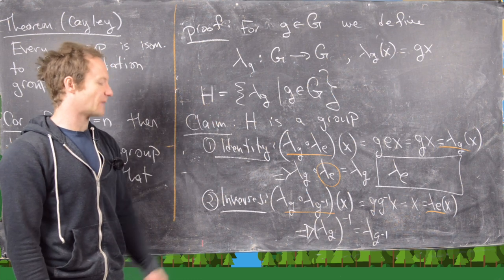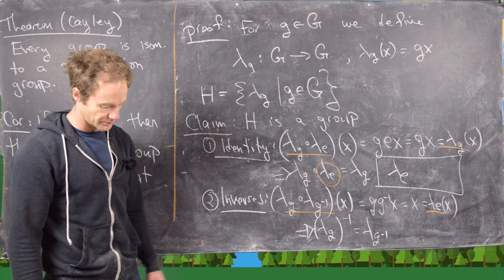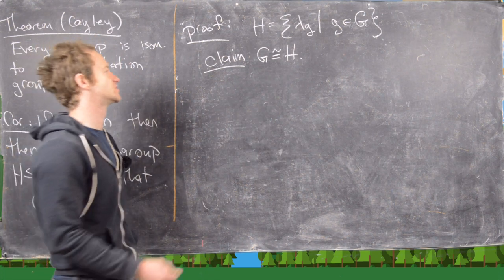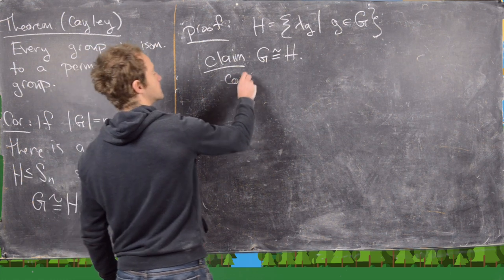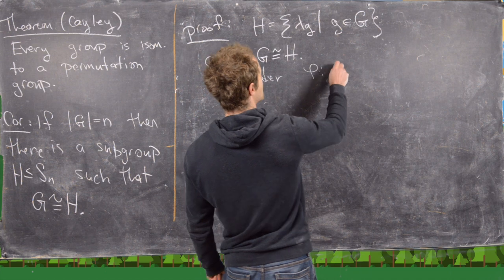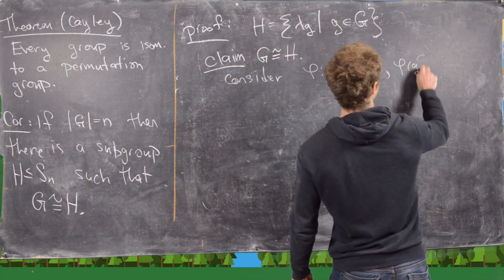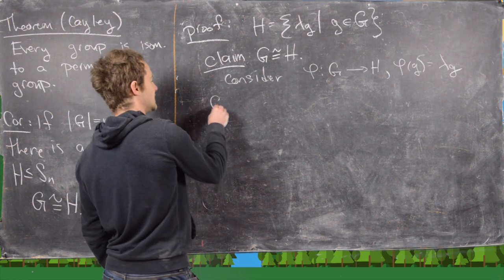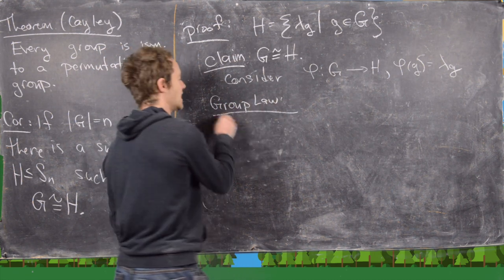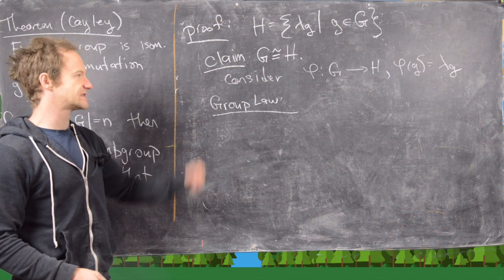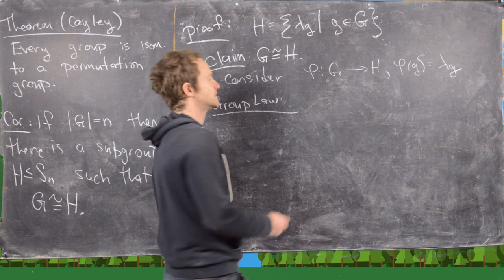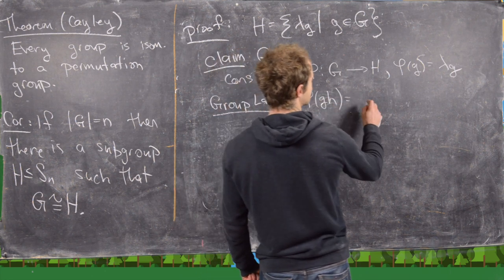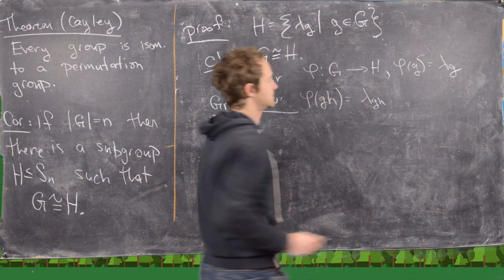Now we want to show that H is indeed isomorphic to our original group G. To finish the proof, we consider the map φ from G to H given by φ(g) equals λ_g. The first thing we need to check is the group law — that multiplication on the left-hand side equals multiplication on the right-hand side. Let's look at φ(gh). That's going to be λ_{gh} by definition. We have a function and we want to show it equals the composition of λ_g with λ_h.